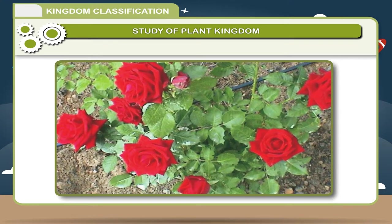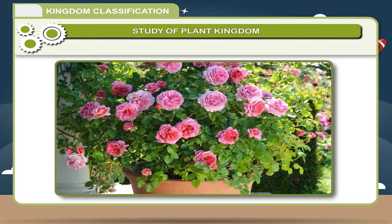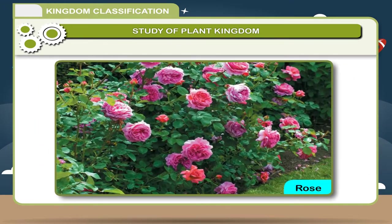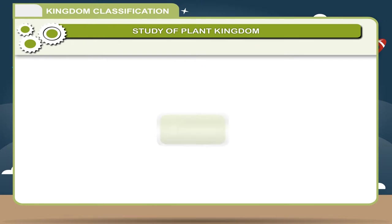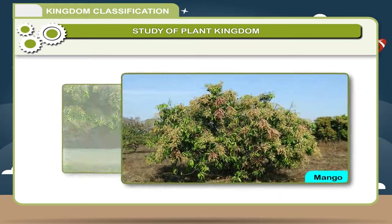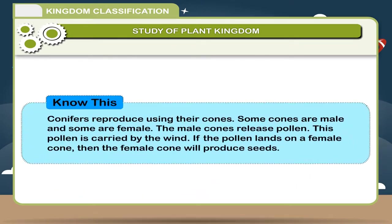Shrubs are short, woody plants, typically with several branches arising from or near the ground. Shrubs are perennial plants which live for at least three or more years. Examples include Rose, Cotton, Henna. Trees are tall, woody plants with a distinct main stem or trunk and they live longer. Examples include Neem, Mango, Peepal, Banyan.